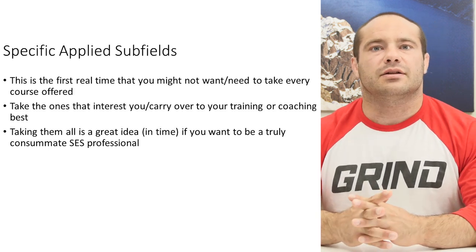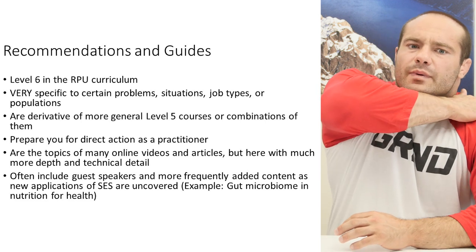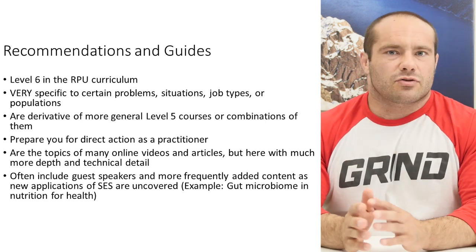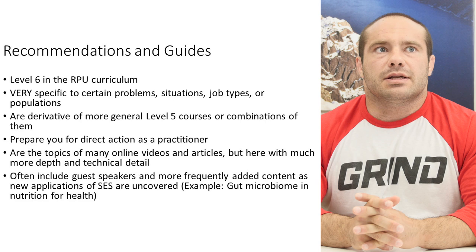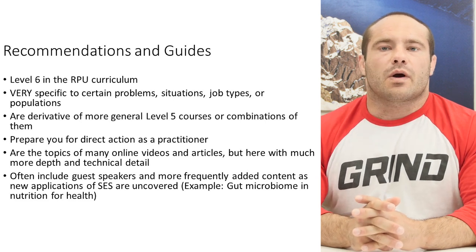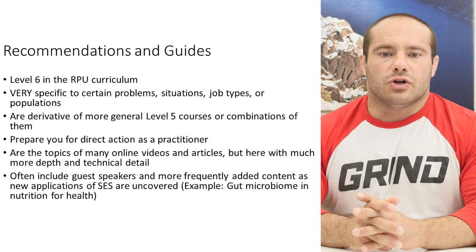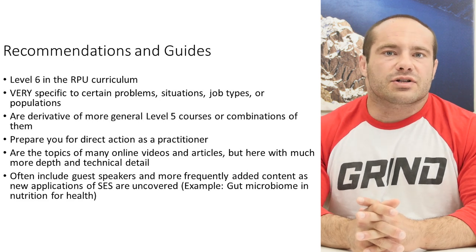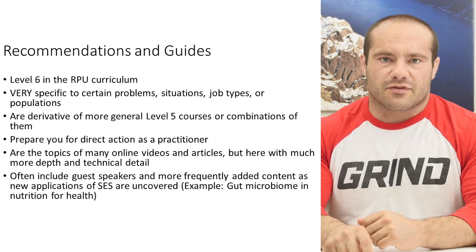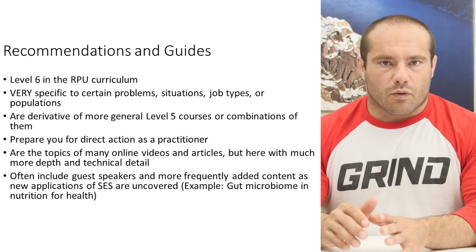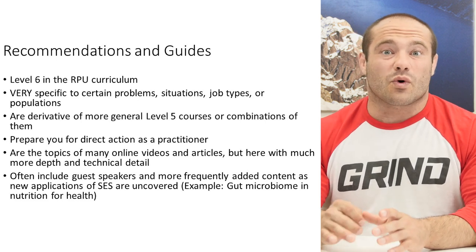Lastly, we have level six in the RPU curriculum, termed in shorthand as recommendations and guides. They're still courses, but they're more like a college seminar course — something not usually offered all the time — where new discoveries, updated methods of understanding, or very specific situations and settings are discussed to prepare people for very specific real-world problems. These courses at level six are very specific to certain problems, certain situations, certain job types, or certain populations.